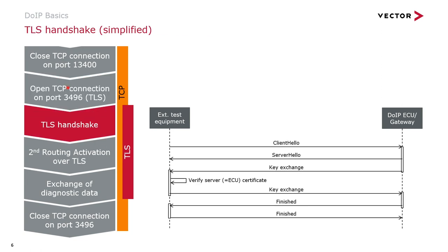On this new TCP connection for TLS, the TLS handshake is performed. In the TLS handshake, a secured TLS connection is negotiated. The tester and the DoIP ECU agree on the version of the TLS protocol and choose a common cipher suite. This is done in the client and server hello.